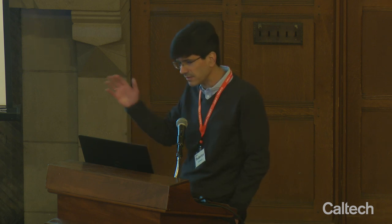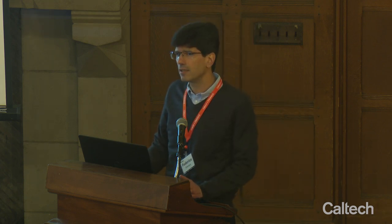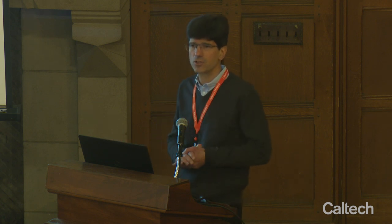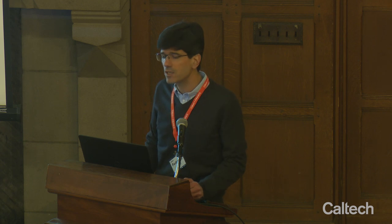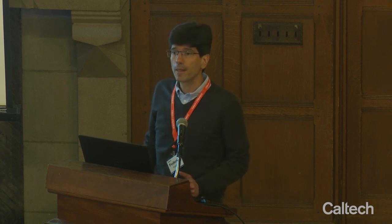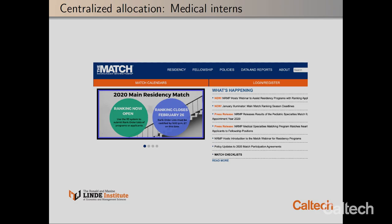I'll pick some specific examples where Caltech faculty and students have played a role. The first example — where we have not played a role — is a labor market, which is strange. Labor markets typically function in a decentralized way, with workers and firms bargaining over wages. However, there are a few labor markets handled in a centralized way. A very common example is medical interns: when students in medical school finish their studies, they have to do an internship, and the way interns are allocated to hospitals is done through a centralized algorithm called the MATCH or NRMP.